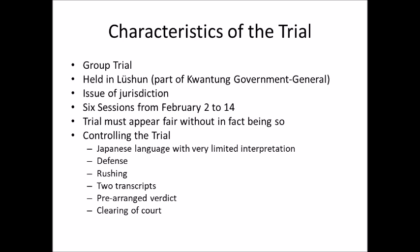This would influence how the trial was held. It would be a group trial — Ahn and the three other defendants — held in Lushun, which was part of the Kwantung Government General. Japan had control of Ahn, so they would deal with the issue of jurisdiction by invoking Japanese law. There would be six sessions from February 2nd to the 14th. The Japanese had to give Ahn a trial that appeared fair — so Japan would get credit for being a civilized country — without actually being fair, because a genuinely fair trial would allow Ahn to challenge Japan and make it look uncivilized.